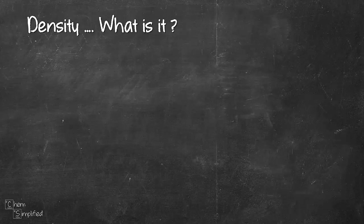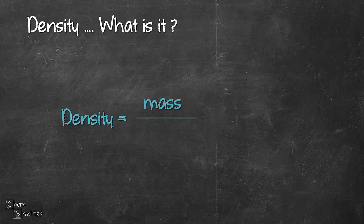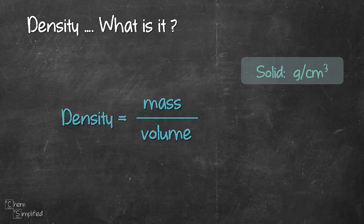First off, here's the formula for density. It's pretty straightforward actually, it's mass divided by volume. Normally density of solid is expressed in grams per cm³, while for liquid it's grams per mL. These two units are actually the same numerically because 1 cm³ equals 1 mL.